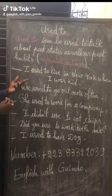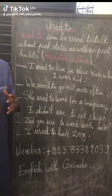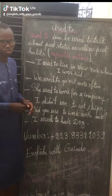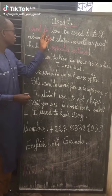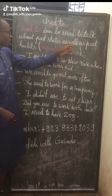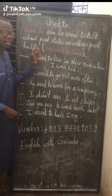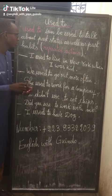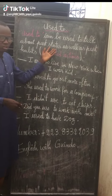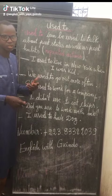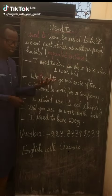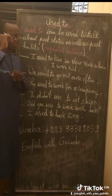Used to is one of the expressions in English. Used to can be used to talk about past states as well as past habits. That means it's used to explain about the past — past actions, past habits, and also repeated actions — the actions that were repeated in the past.